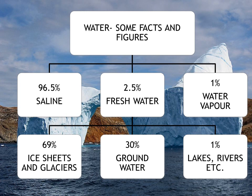Approximately 30% of freshwater is in the form of groundwater. And only 1% of water is in the form of lakes, rivers, ponds, and other sources — this is the fresh water which is directly available for drinking purposes.